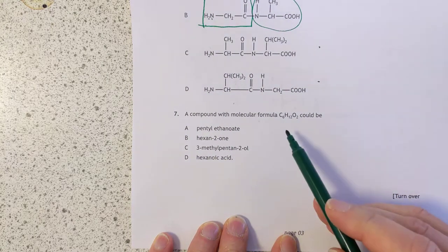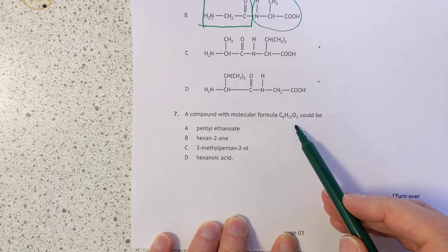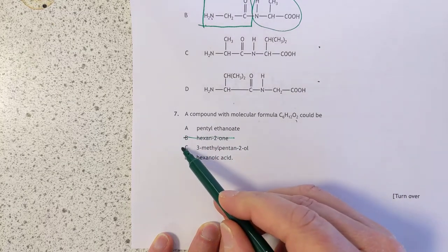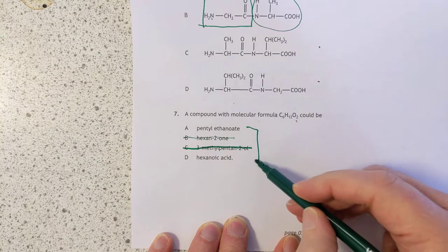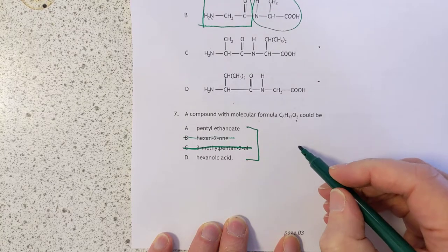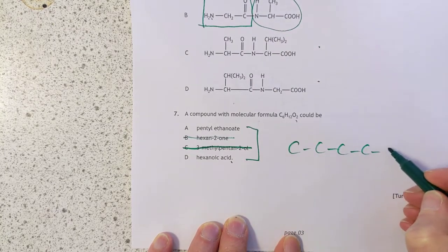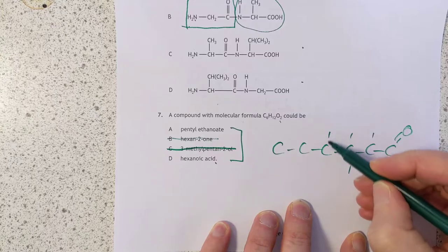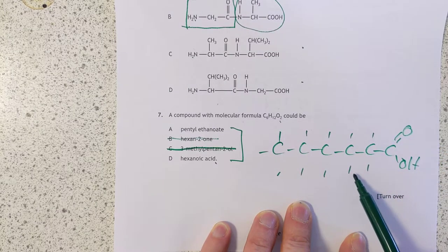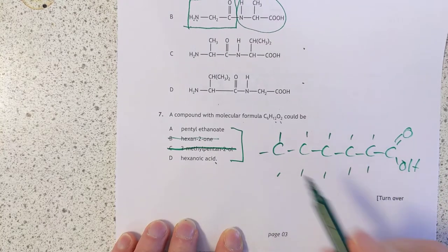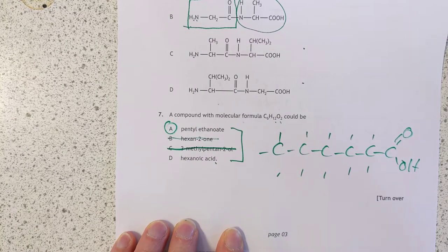Question 7: A molecule with the formula C6H12O2 could be... There's two oxygens, it's definitely not that one, it's only got one oxygen. Same logic, that one. We're left with these two molecules which both have two oxygens in them. We're going to have to draw them out. Hexanoic acid has six carbons and twelve hydrogens, and we're only on that. So I'm going to go with that one.